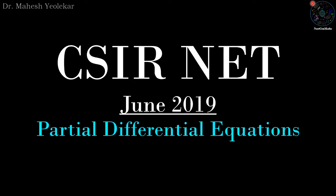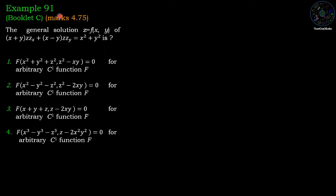Hello friends. In this video we are going to discuss a problem of partial differential equations from CSIR NET June 2019, Example 91 from booklet C, which is of 4.75 marks. The equation: find the general solution z, given (x+y)z · z_x + (x-y)z · z_y = x²+y². The first option is: f(x²+y²+z², z²-xy) = 0 for arbitrary C1 function f.